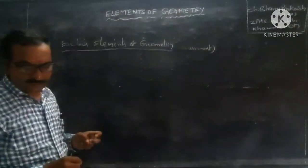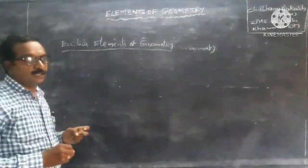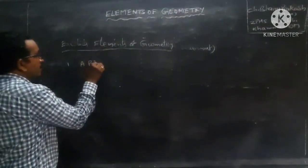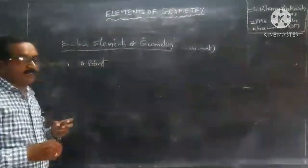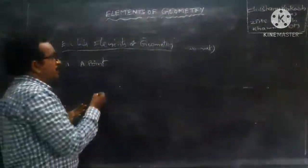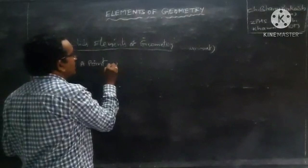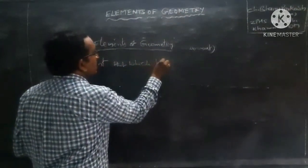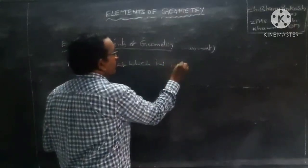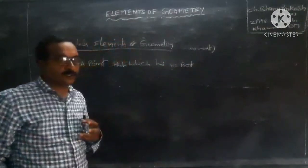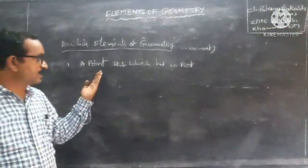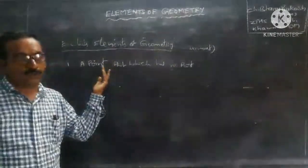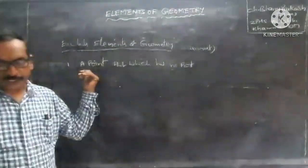The first definition: a point is that which has no part. A point has no path, no length, no breadth — that means there is no dimension.